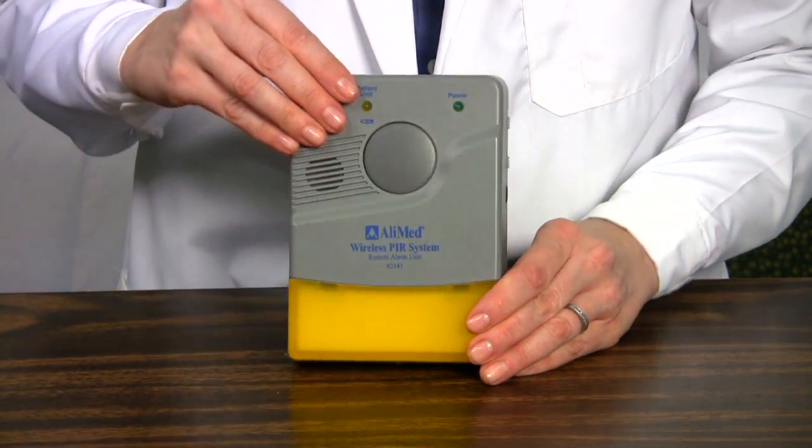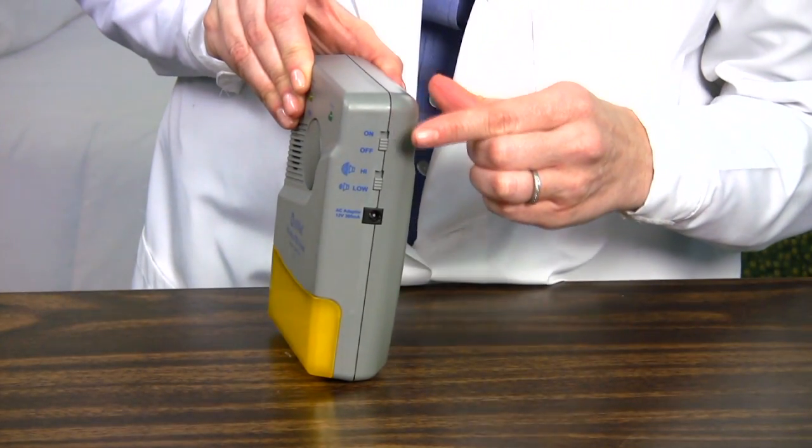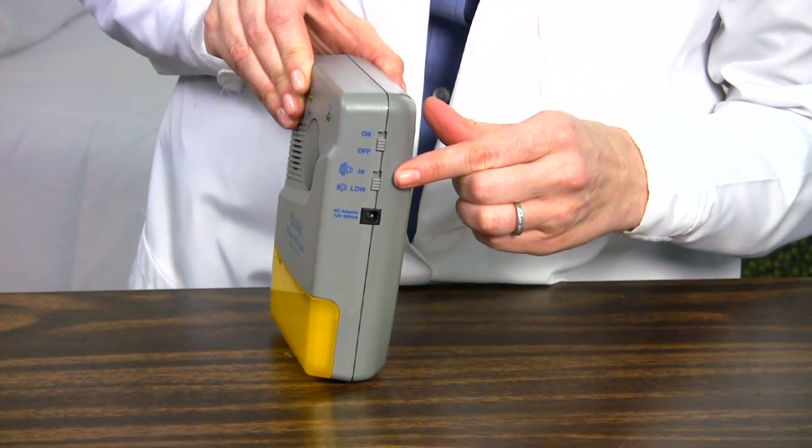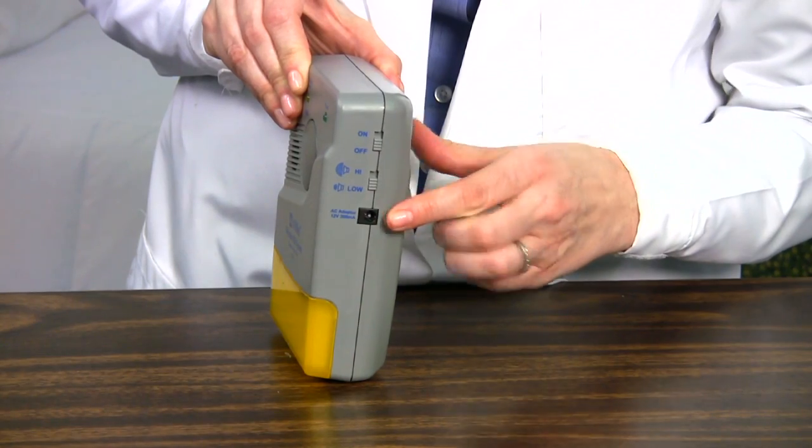To the side is the power on off selector. Just below is the high low volume selector, and below that is the AC adapter port. You may order an AC adapter separately.